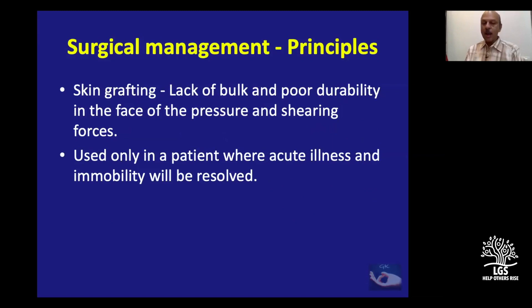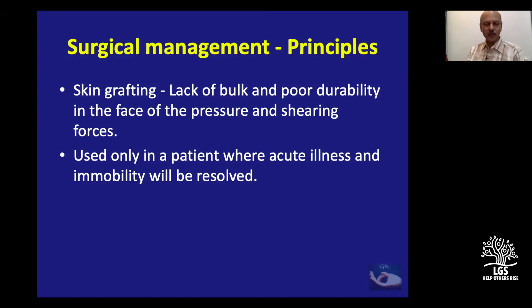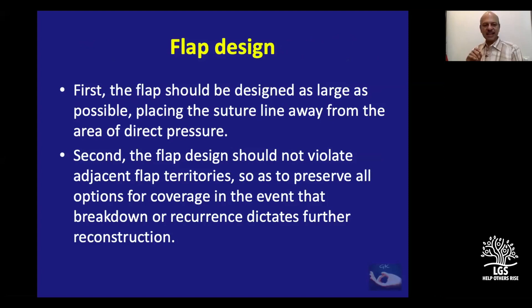Skin grafting can be done if there is healthy granulation tissue, but skin grafts lack bulk and have poor durability in the face of pressure and shear — especially in immobile or spinal injury patients. Skin grafting is only a temporary solution, used only when the patient's acute illness and immobility will resolve and the patient will become active. Flap design principles: design the flap as large as possible, placing the suture line away from the area of direct pressure, and do not violate adjacent flap territories — preserving them for future use if needed.